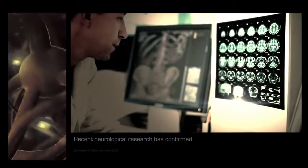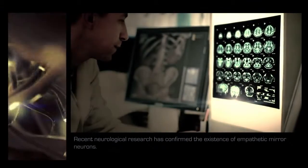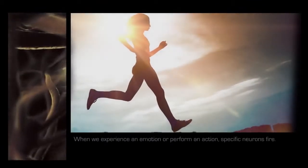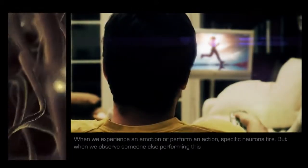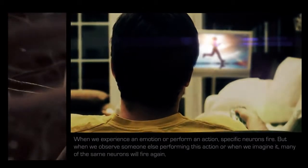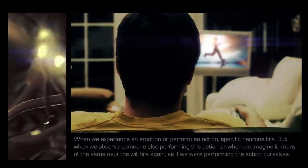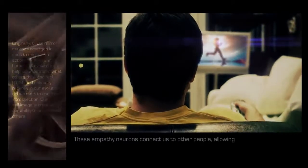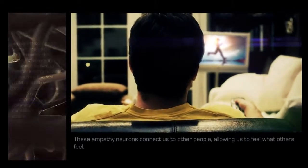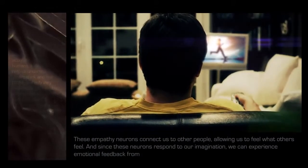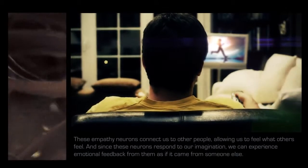Neurological research has confirmed the existence of empathetic mirror neurons. When we experience an emotion or perform an action, specific neurons fire, but when we observe someone else performing this action, or when we imagine it, many of the same neurons will fire again, as if we were performing the action ourselves. These empathy neurons connect us to other people, allowing us to feel what others feel. And since these neurons respond to our imagination, we can experience emotional feedback from them as if it came from someone else. This system is what allows us to self-reflect.